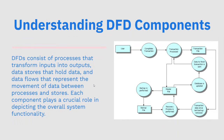Understanding data flow diagram components: data flow diagrams consist of processes that transport inputs to outputs. Data stores hold data, and data flows represent the movement of data between processes and stores. Each component plays a crucial role in depicting overall system functionality. Looking at this picture, you'll notice how it shows where things are processed and where they're going. It's not about people — it's about the data flow at the business. Business analysts use things like this with business processes too, to make sure that things are going through correctly.